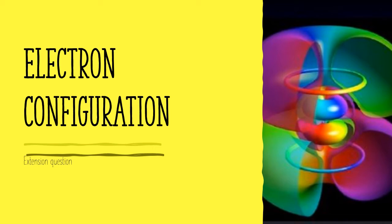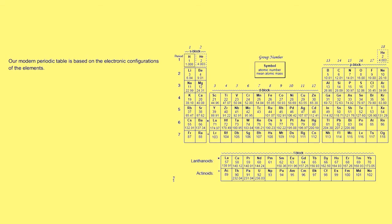Today we have an extension question on electron configuration. Here we've got a modern periodic table that goes all the way up to Oganesson, element 118, which a couple years ago was finally discovered but does not occur naturally. Our modern periodic table is based on the electron configurations of the elements.